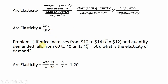Let's use this formula to solve a problem. If price increases from $10 to $14 and quantity demanded falls from 60 to 40, what is the elasticity of demand? The change in price is positive $4. The change in quantity is negative 20 units. The average price is $12, since (10 + 14) / 2 = 12, and the average quantity is 50, since (60 + 40) / 2 = 50.